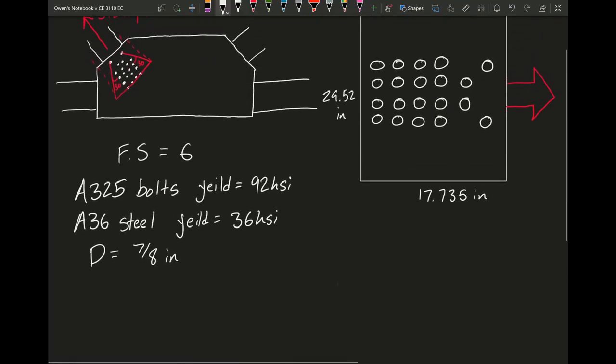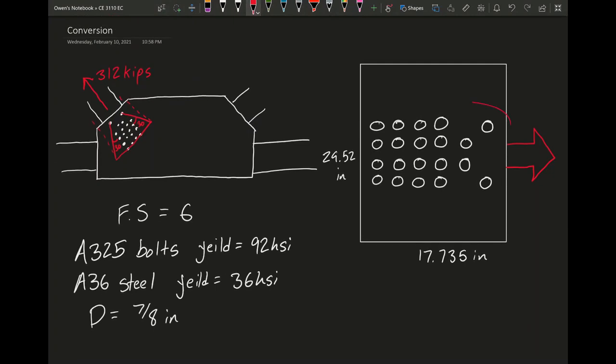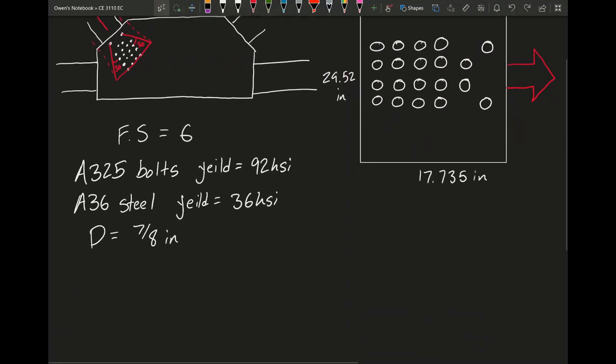It differs between different thicknesses, but for the thicknesses we're going to be ranging between, these values should be fairly accurate. Our bolt diameter is equal to 7 eighths inch. Each of those 20 bolts that is on our thing over here, those are 20 and they're all 7 eighths of an inch in diameter.